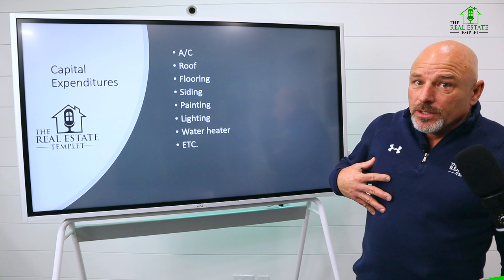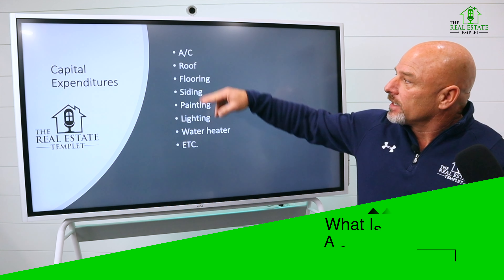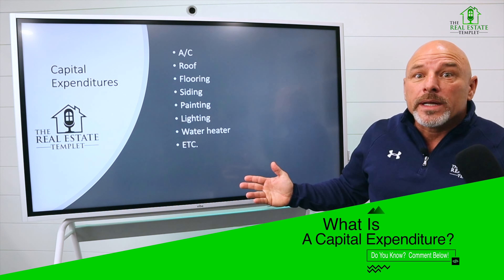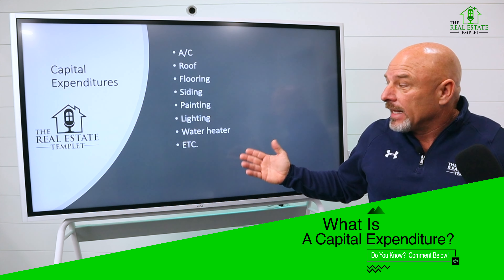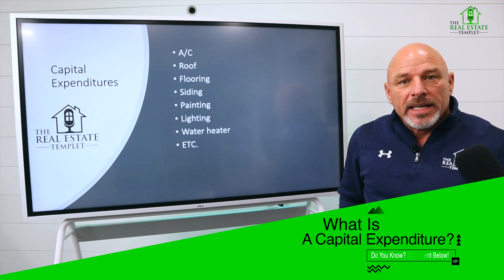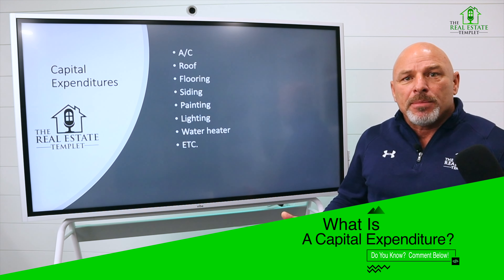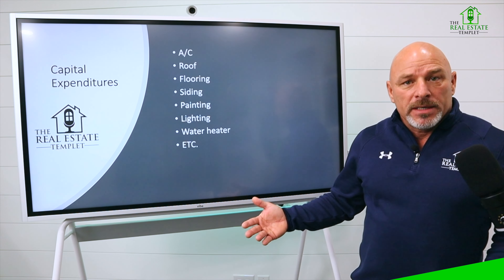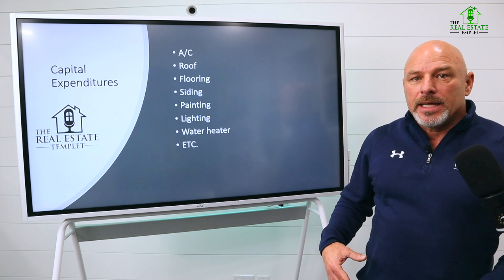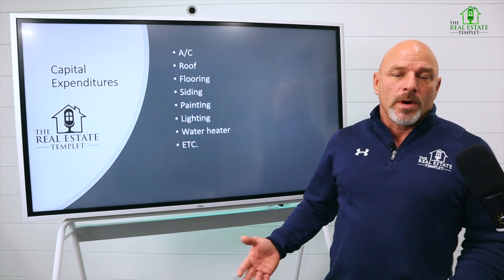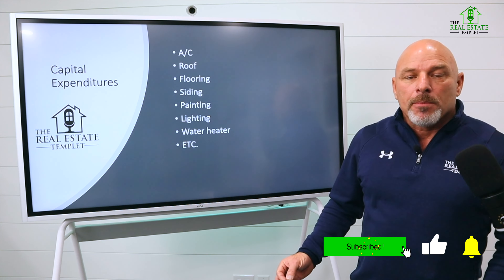What is a capital expenditure? A capital expenditure is an air conditioning unit, a roof, flooring, siding, painting, lighting, a water heater — it can be almost anything. Everybody takes a capital expenditure and looks at it from a different perspective. For me and my accounting purposes, anything over $2,500 is going to be a capital expenditure for me.